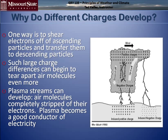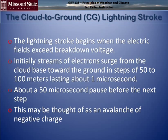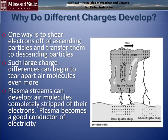Large charge differences can begin to tear apart air molecules even more, and then plasma can develop. These are areas where there are no electrons on the air molecules — very good conductors of electricity. Air is not, but plasma is. So if you have a big enough potential between positive and negative, we get the beginnings of a lightning stroke.